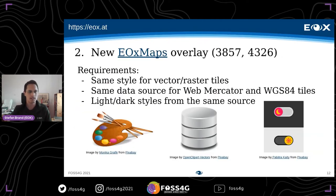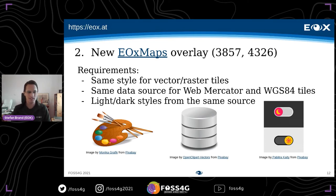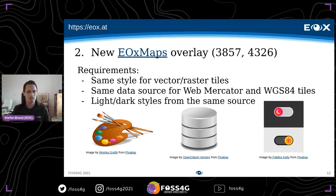Now on to our second case study: the EOX maps overlay for both Web Mercator and geodetic projections. We ended up with eight different layers — eight combinations — because we had the requirement of the same style document for both vector tiles and raster tiles. We would render raster tiles for clients that do not support vector tiles yet, use the same data source for both projections, and needed both a light and dark style for bright and satellite basemaps.